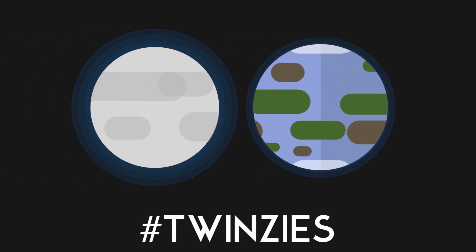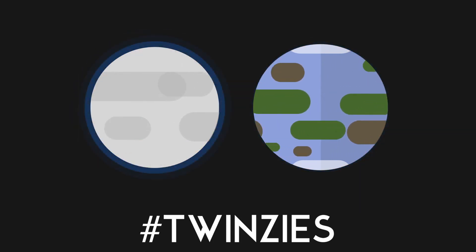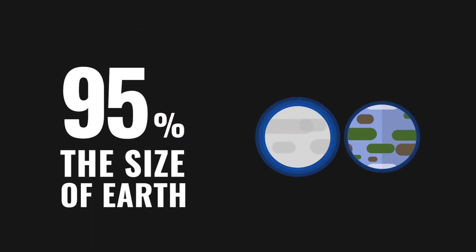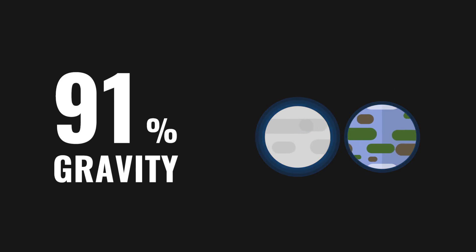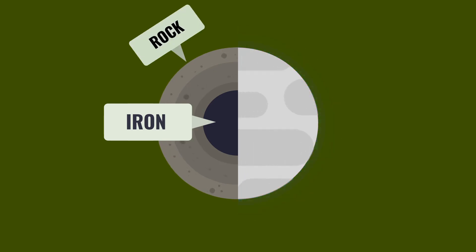Venus is often referred to as Earth's twin planet. After all, it is 95% of Earth's size, 91% of our planet's gravity, and they share a similar composition, with an iron core surrounded by rock.